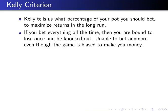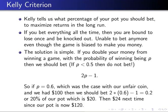Even though the game is biased to make you money, losing everything is the risk. The solution is the formula 2p - 1, where p is your probability of winning. If you win, you double your money; if you lose, you lose the bet. If p is less than 0.5 you don't bet. As an example, if p = 0.6, you plug it into the formula and get 0.2 — you should bet twenty percent of your money.